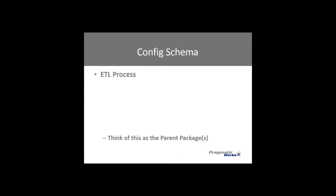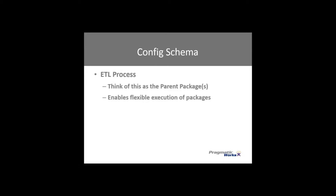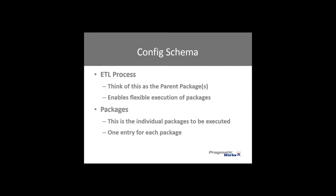The first thing I want to talk about is the config schema. I've created something called an ETL process — think of this as the parent package or packages, the entry point where we start executing our ETL. This is where we enable that flexible execution of packages, so we don't have to specify each package in order manually. We configure that in the database. The second element in our config schema is basically packages — all the individual packages that need to be executed, with one entry for each package that exists.